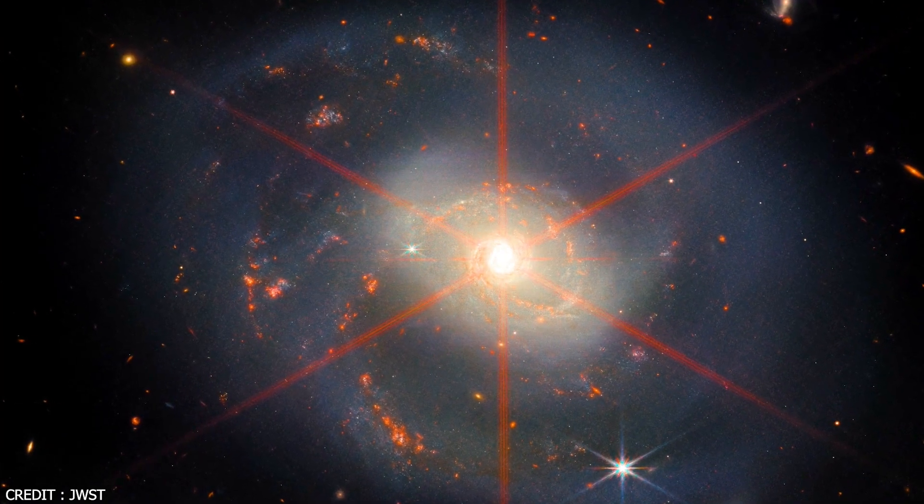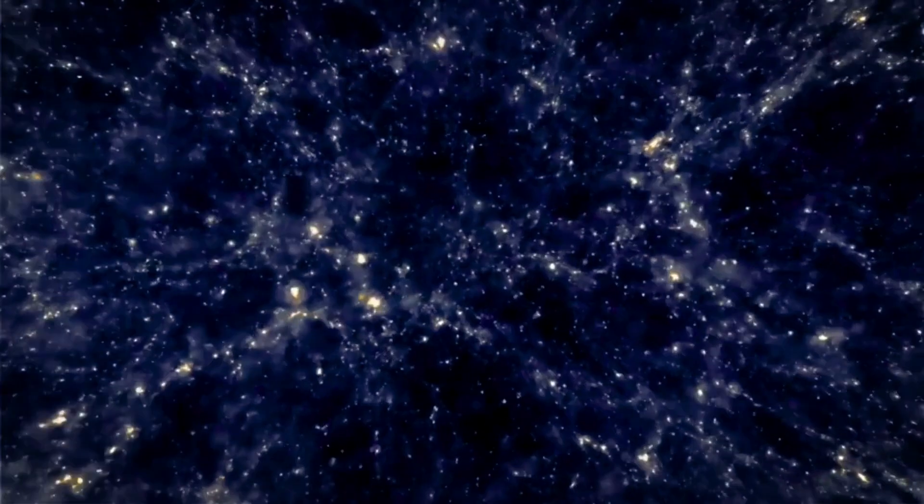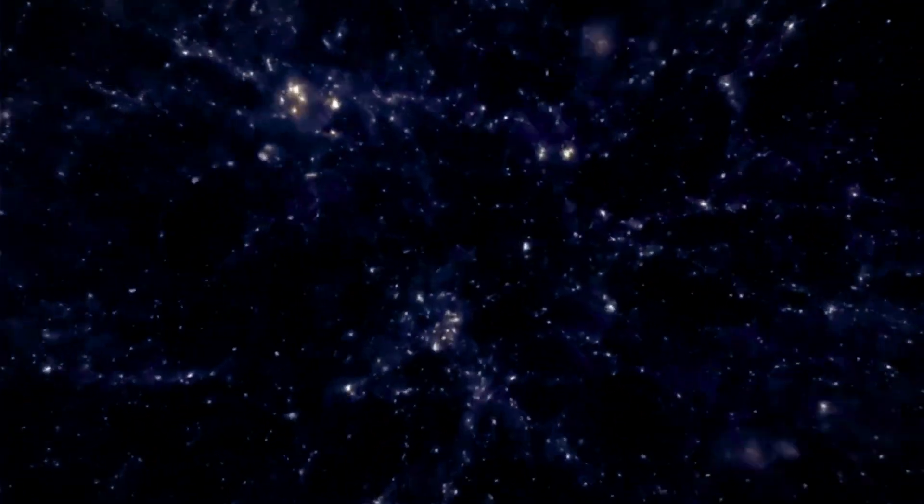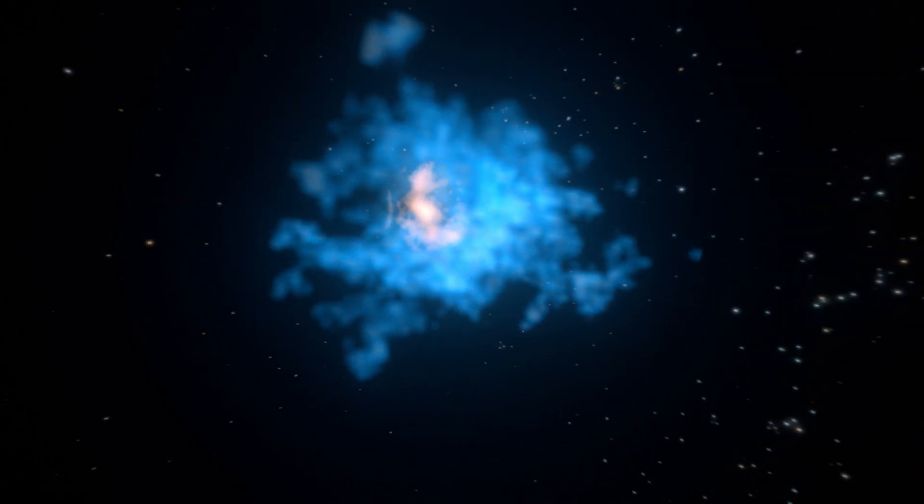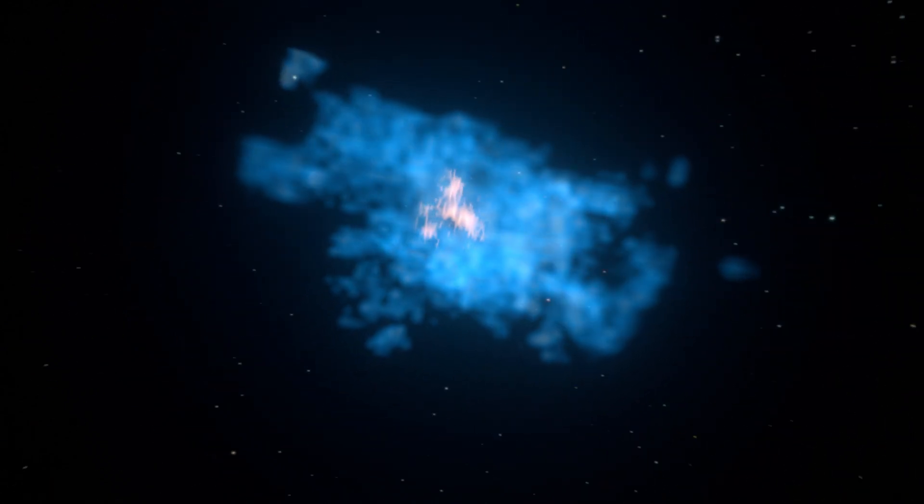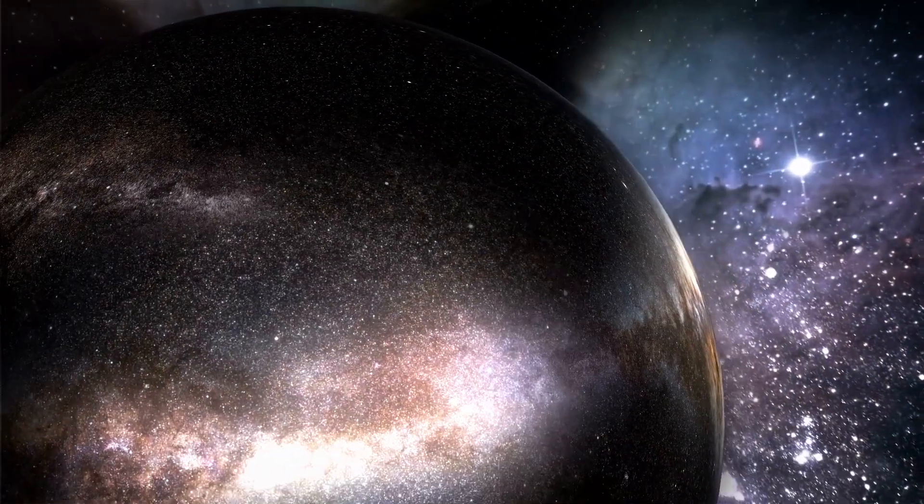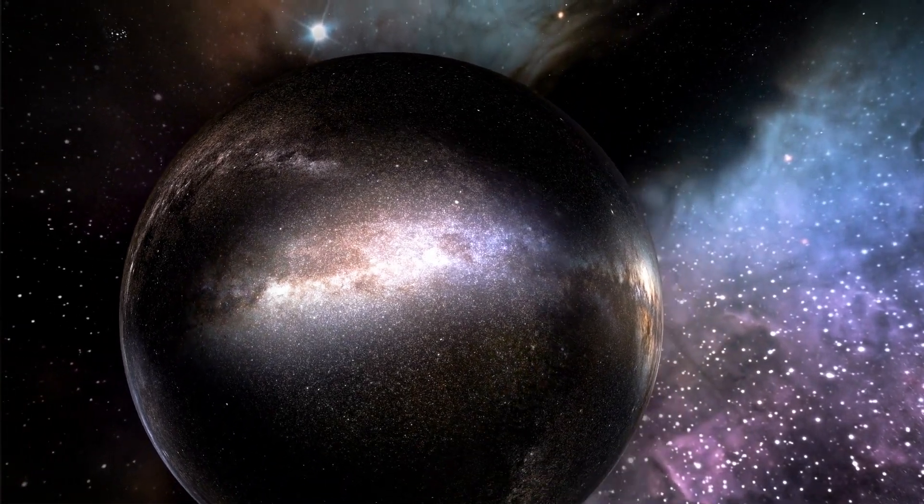Recent observations, merely two billion years into the universe's existence, indicate that nearly 90% of galaxies exhibited extreme emission features, highlighting the prevalence of these shimmering, gassy galaxies in the 13.8 billion-year-old cosmos. The universe, it seems, had a penchant for these radiant celestial displays during its early years.